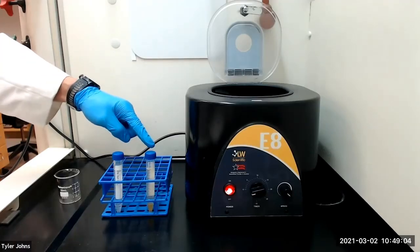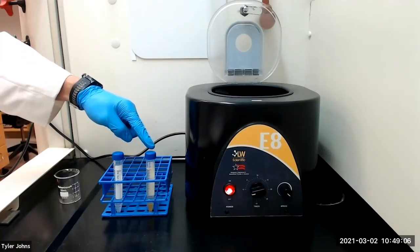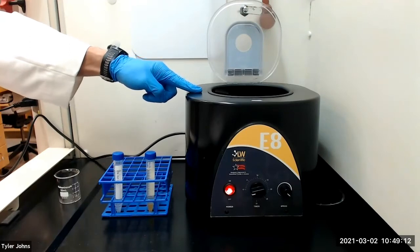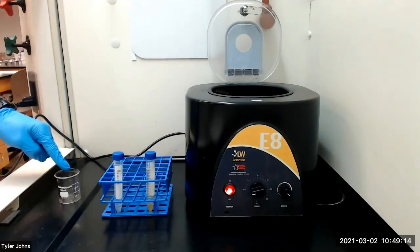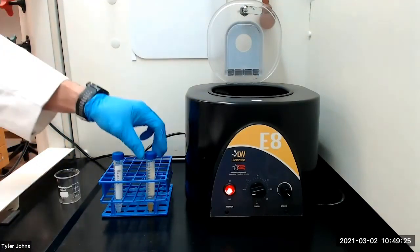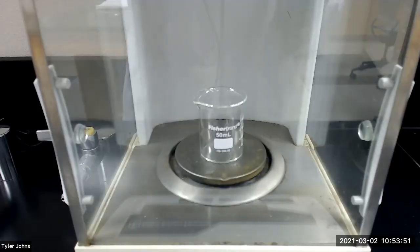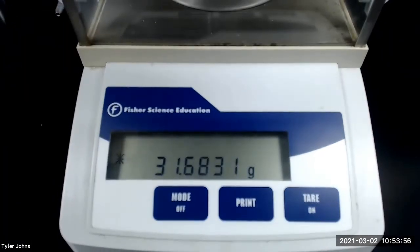After 15 minutes, we will next separate the layers more completely by centrifuging the mixture for an additional 5 minutes. And while the mixture centrifuges, we need to pre-weigh a 50 milliliter beaker. The mass of the pre-weighed 50 milliliter beaker is 31.6831 grams.